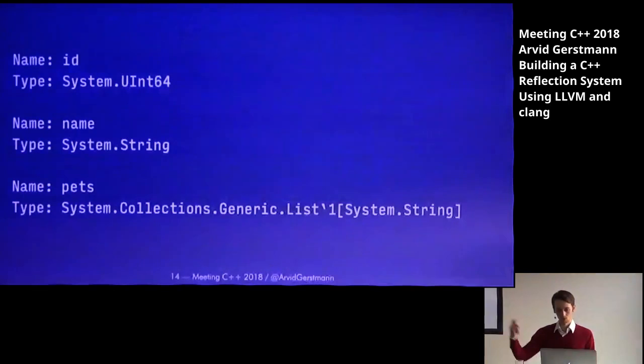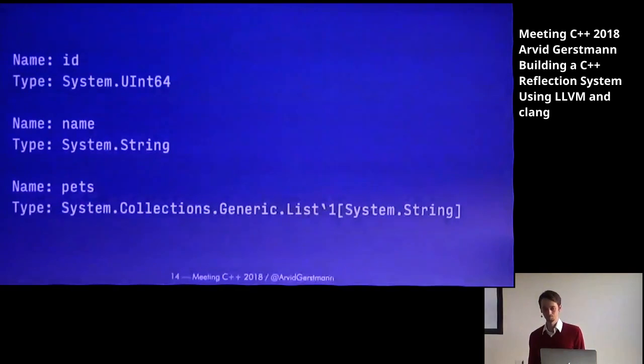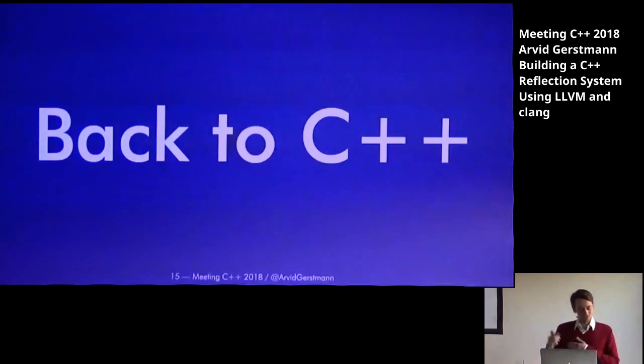Looking at the output, it looks something like this. We have the id, which is of type uint64. We have the name, which is of type string. And then we have the pets, which is of type list of string. These are all the types and names of the fields we have in our class. But this is a C++ conference, right? We don't want to write C# here. So let's write the same thing in C++.